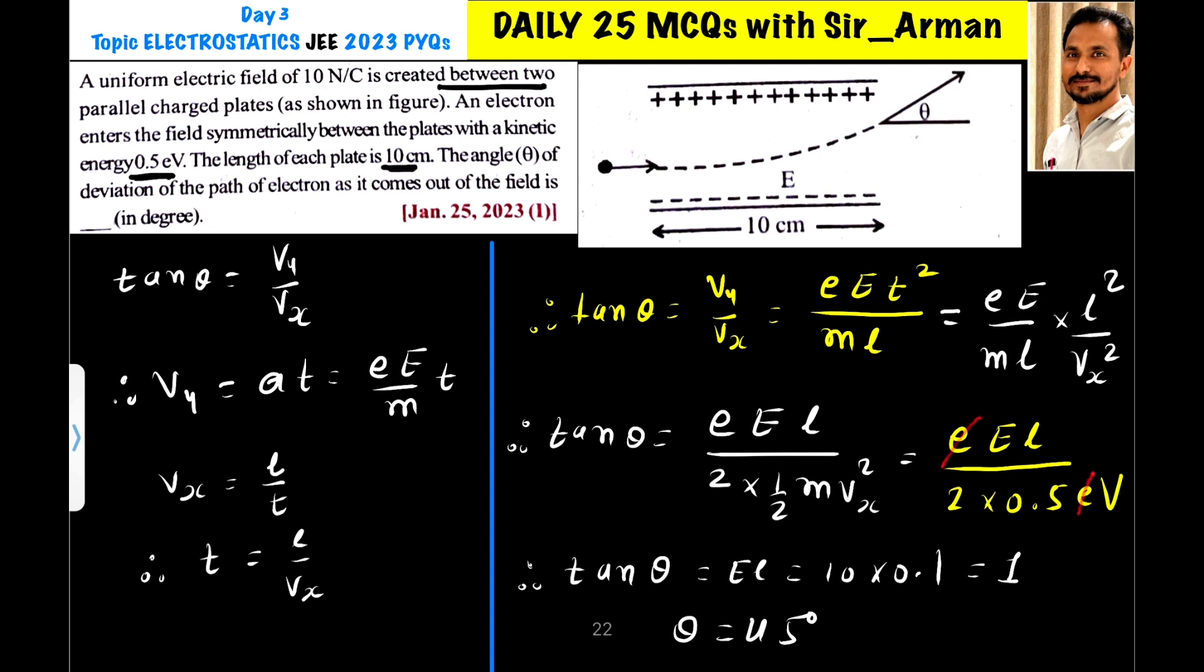The angle theta of deviation of the path of electron as it comes out of the field is. So here what is happening? We have fired an electron.